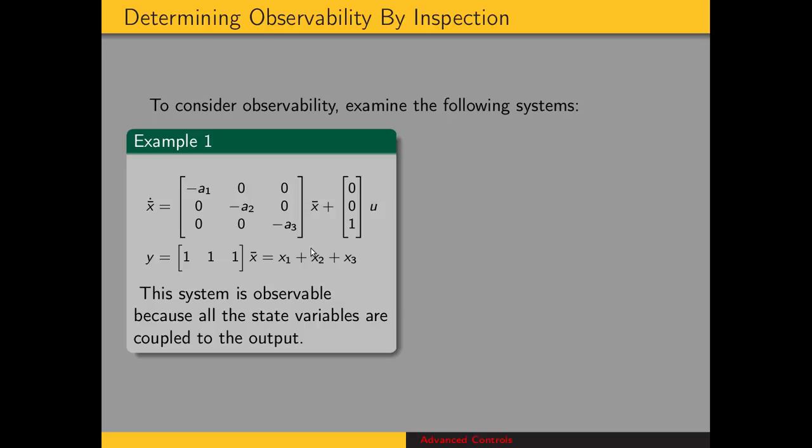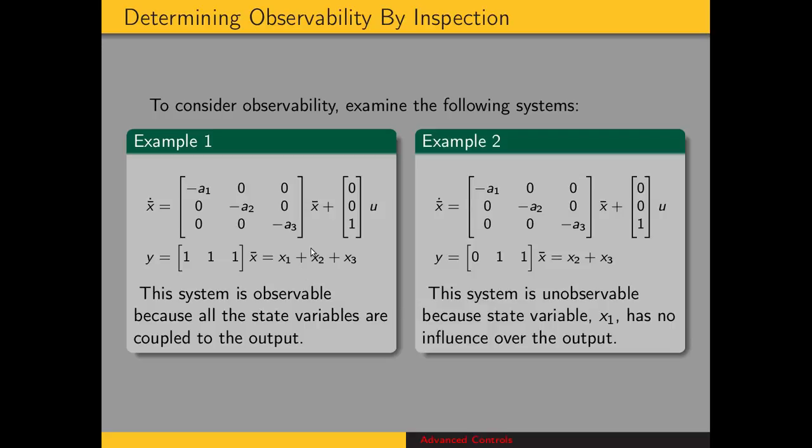Now, let's change this state-space representation slightly. We have the same diagonal state matrix, input matrix, but the output matrix has a 0 in the first element. And so our output equation is just x2 plus x3.